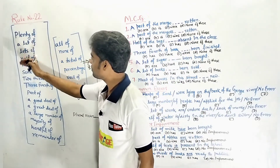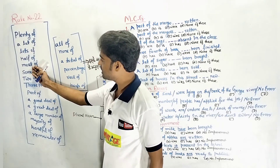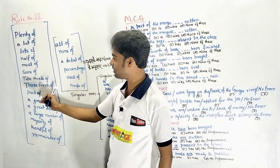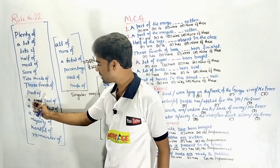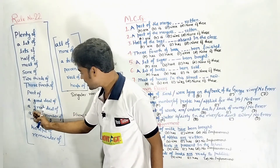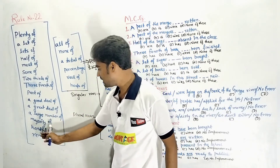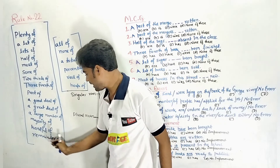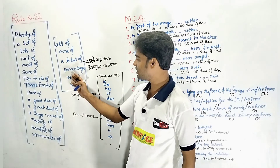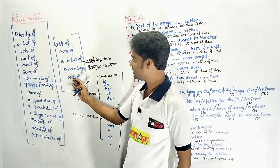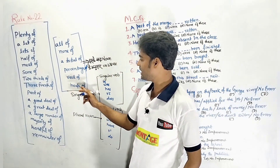The quantifier expressions covered include: plenty of, a lot of, lots of, half of, most of, some of, two thirds of, three fourth of, part of, a good deal of, a great deal of, a large number of, majority of, handful of, remainder of, all of, none of, a total of, percentage of, rest of, heaps of.